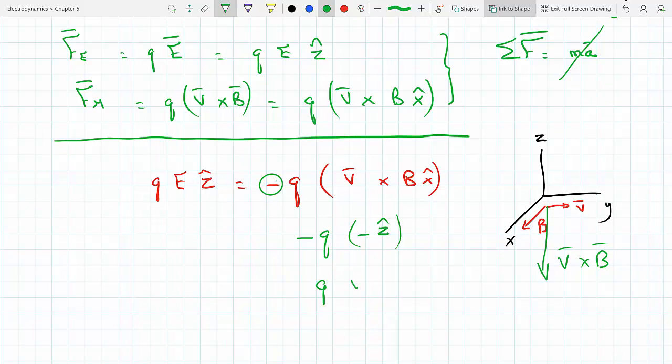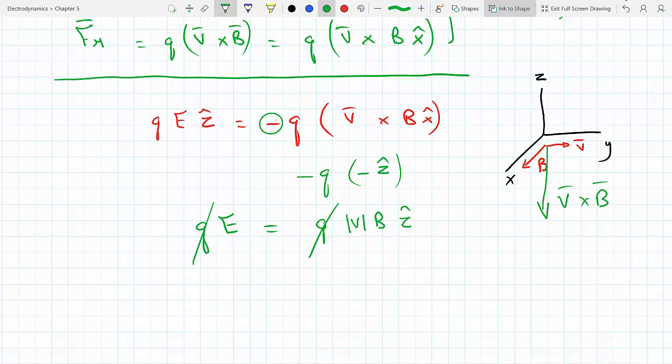Right? And then the speed times B in the z. And this has to equal q E. Well, q cancels q. And this is also in the z. So the components of the z has to be the same. This has to equal this, which makes v equals E over B. The speed equals E over B, and it's in the positive y-direction.